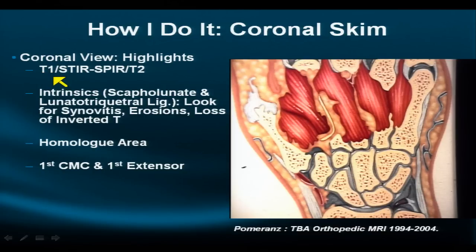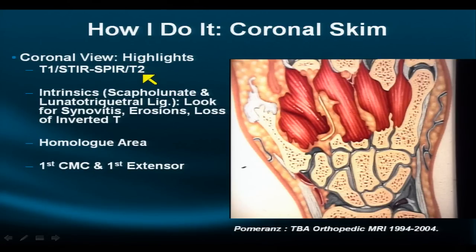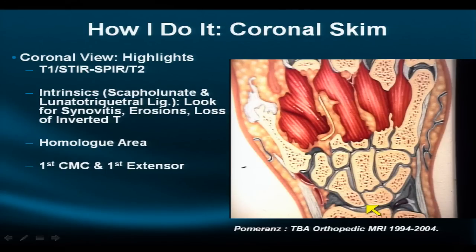The coronal view is usually combined with a series of sequences that are fat-weighted like the T1, and very heavily water-weighted like the short time inversion recovery (STIR), or the spectrally sensitive inversion recovery (SPIR), or the less water-weighted but still water-emphasized T2-weighted image. We use the coronal projection especially to look at the intrinsics — the scapholunate and the lunatotriquetral ligament — and look for areas of generalized synovitis as indirect signs of laxity or failure.